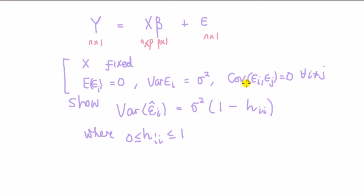Some books use the stronger assumption of independence, which implies then covariance is zero. Saying that covariance is zero is the same as saying that the correlation between the error terms is zero. Under these conditions, we show that the variance of the residuals Var(ε̂_i) is σ²(1 - h_ii), where h_ii is between zero and one.